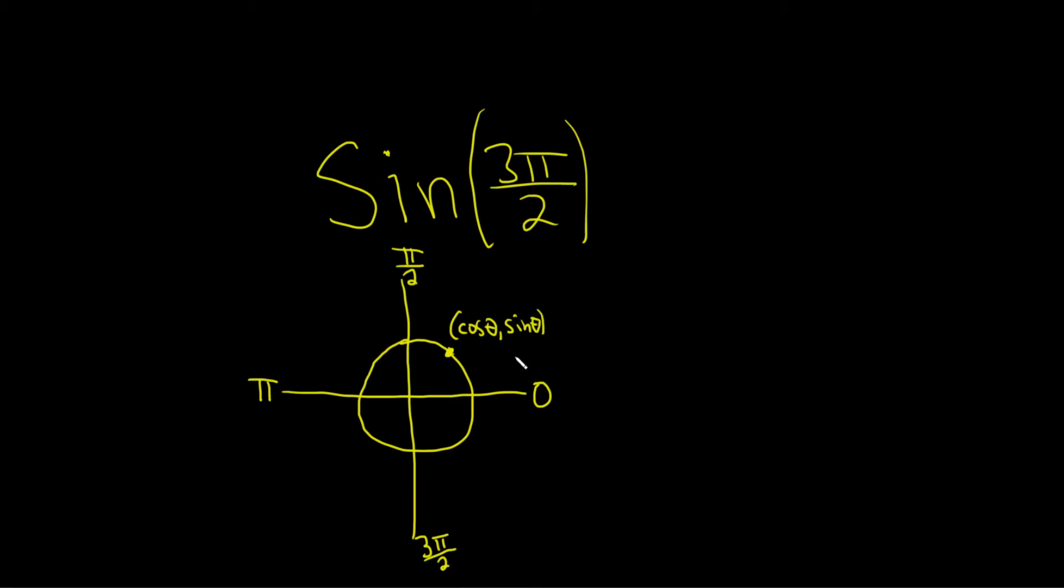So we are interested in the point here, right, because we want 3 pi over 2. Let's think about what this ordered pair is. We haven't really gone left or right so the x coordinate is 0. Because it's the unit circle it has a radius of 1 so we travel down 1. So the y coordinate is negative 1.